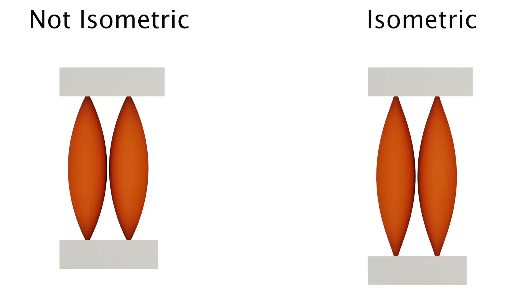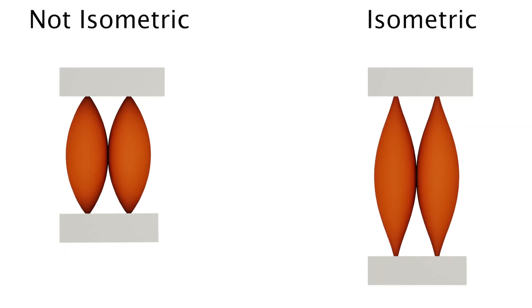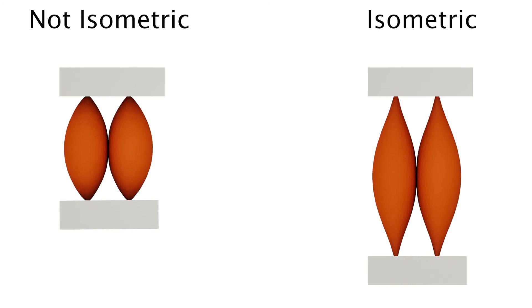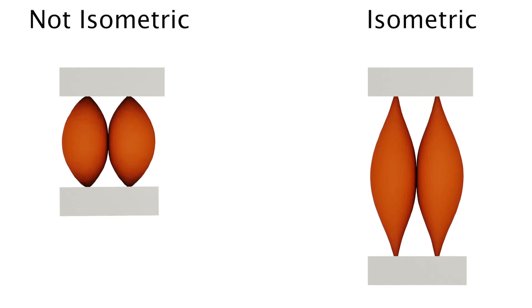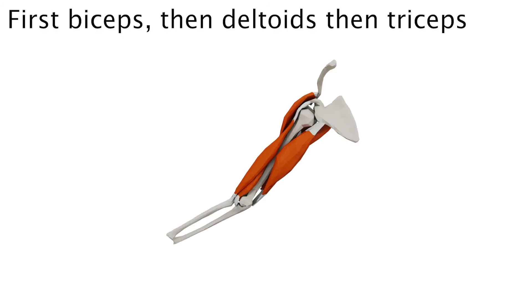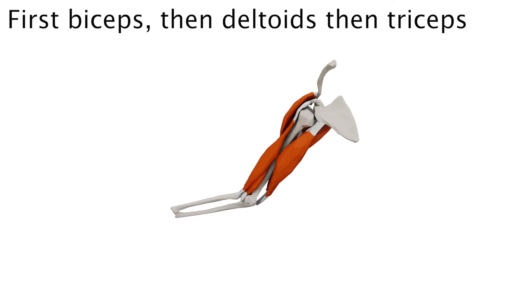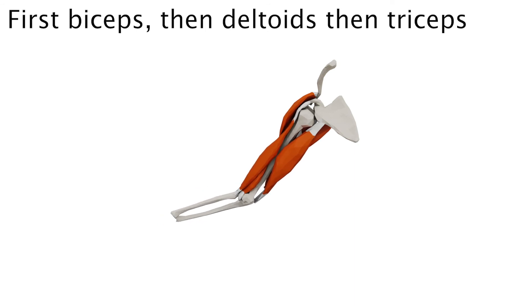Here are some more results generated by our method. This is an example of an isometric contraction where the muscle contracts without moving any bones. Here we show that you can flex opposite pairs of muscles sequentially to move your arms back to a neutral position.